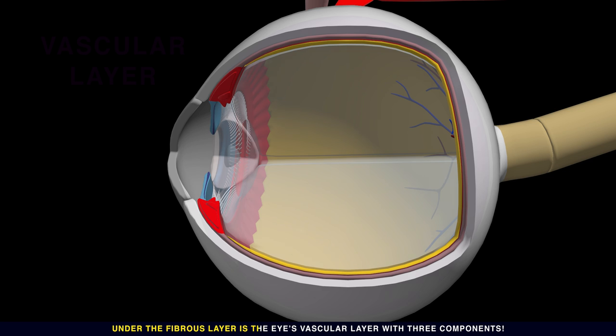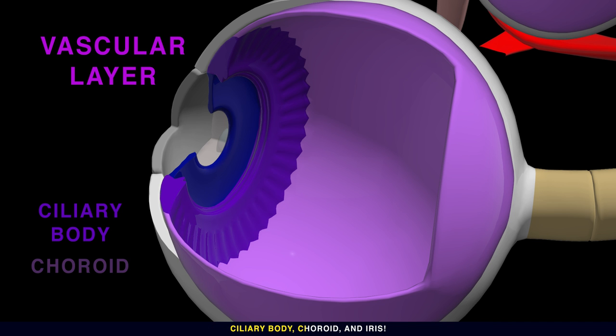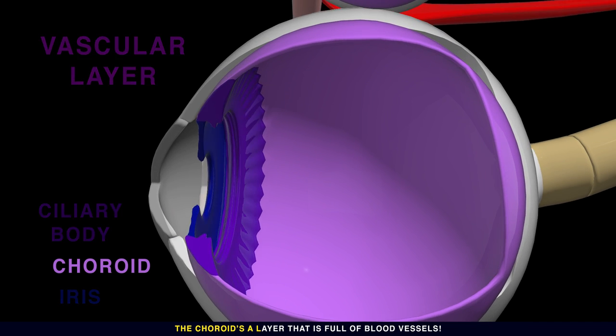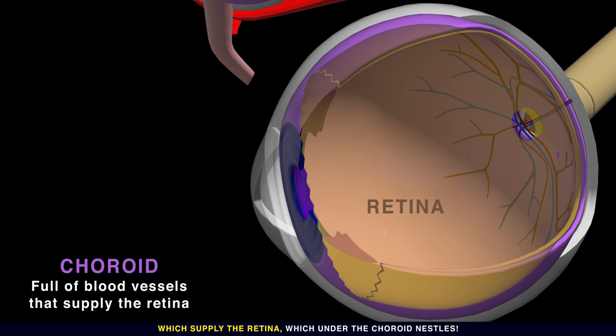Under the fibrous layer is the eye's vascular layer with three components: ciliary body, choroid, and iris. The choroid's a layer full of blood vessels which supply the retina that nestles under the choroid.